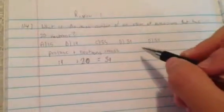So then if we do 20 plus 19, our mass number should be 39. So our answer should be D 39.